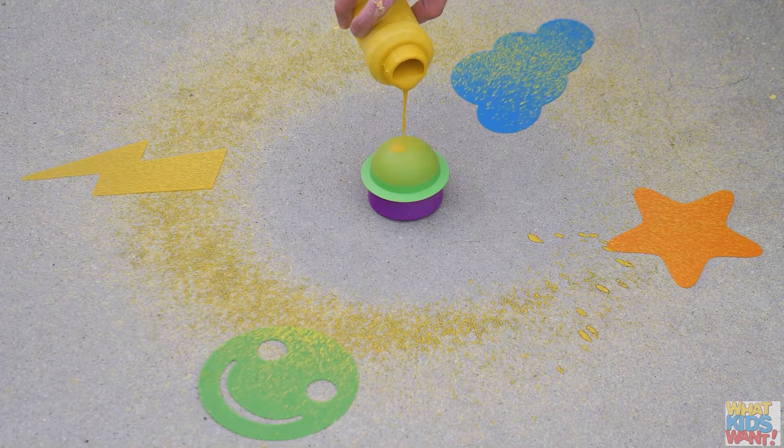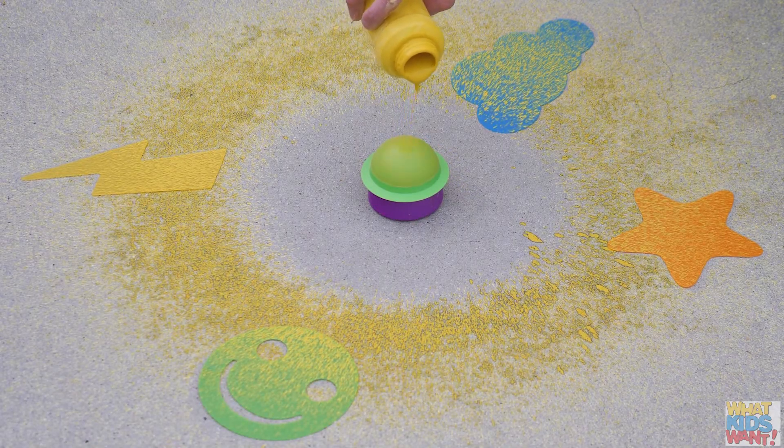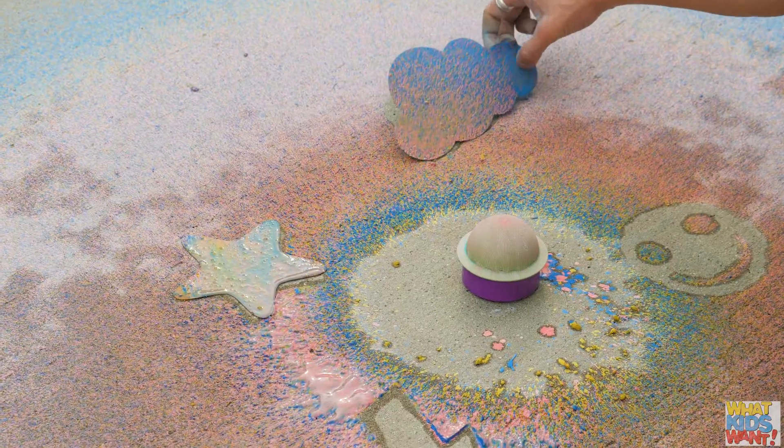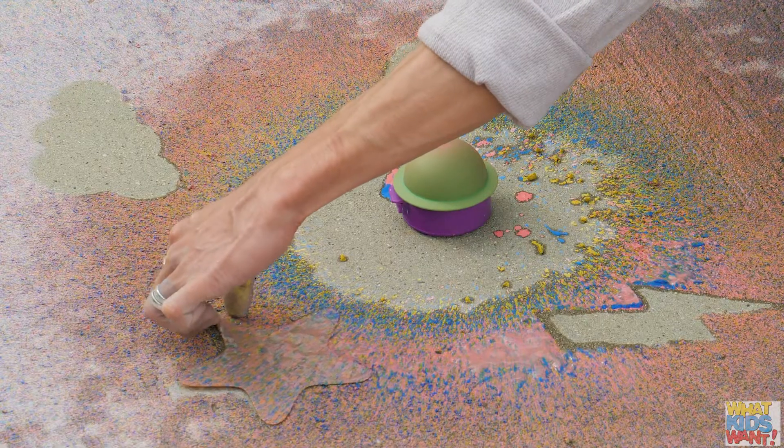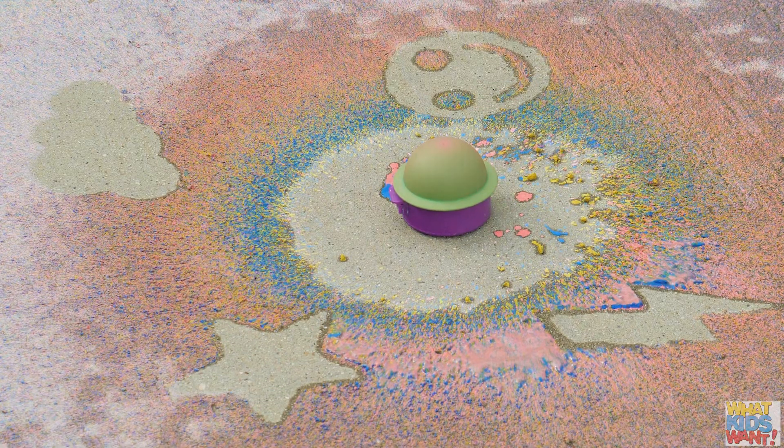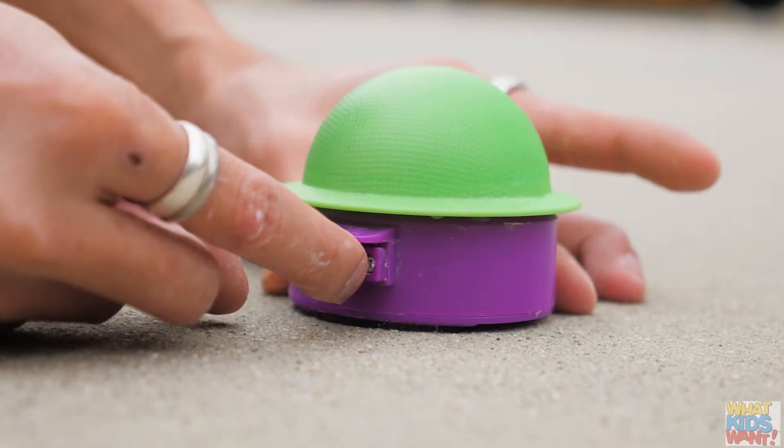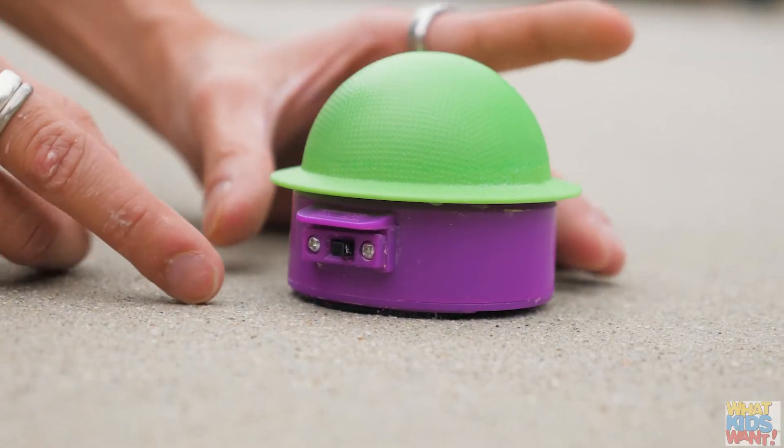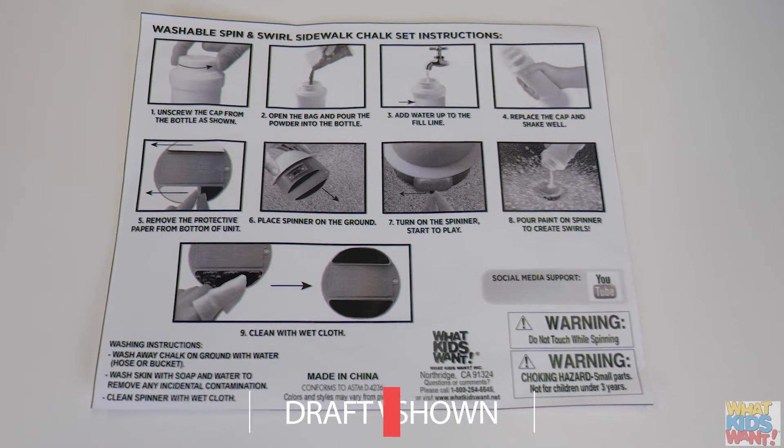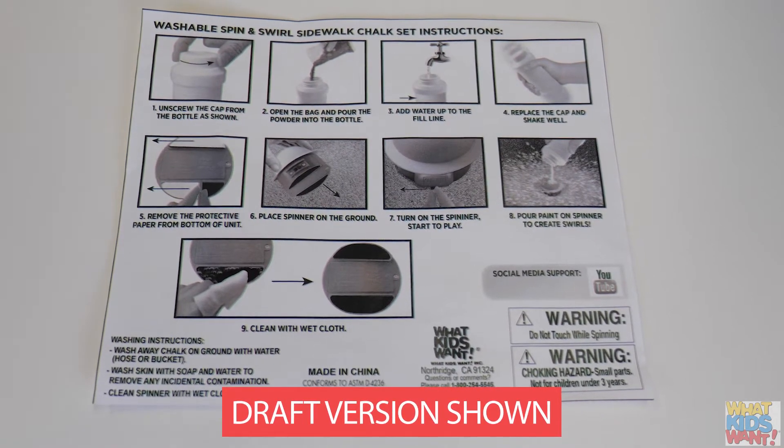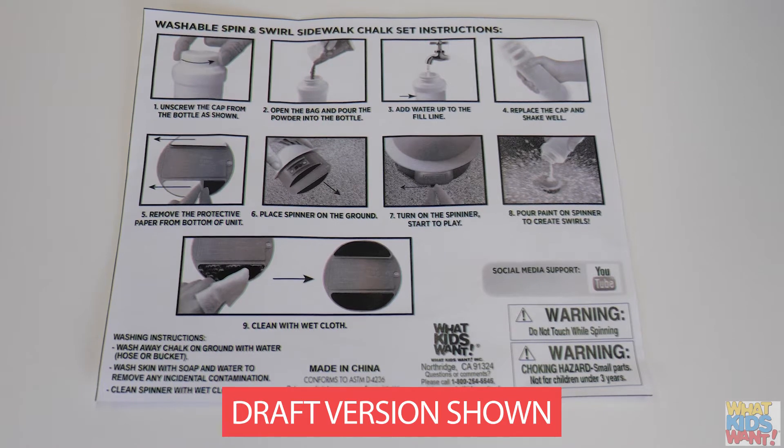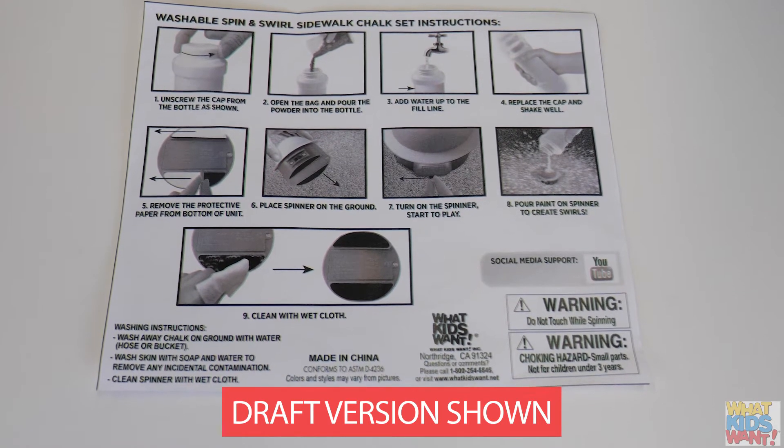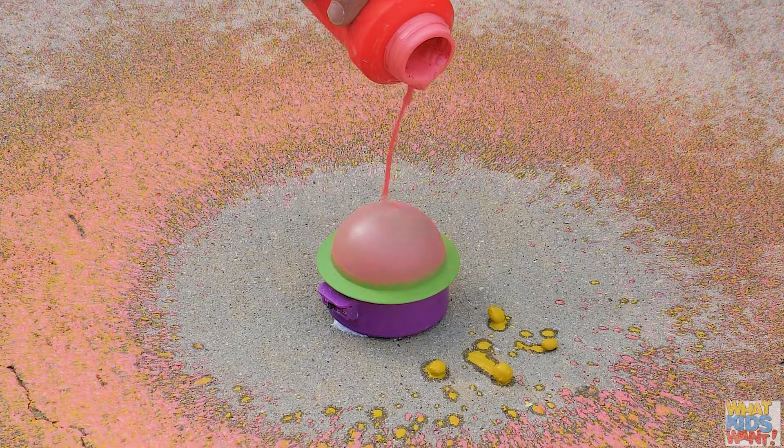The chalk spinner can be used with any washable chalk paint powder and washable premixed paint after the chalk paint powder contained in the set has been used up. Turn off the chalk spinner after use. Please reference the instruction sheet included in the set for important information including washing and care instructions and maintenance instructions for the chalk spinner unit.